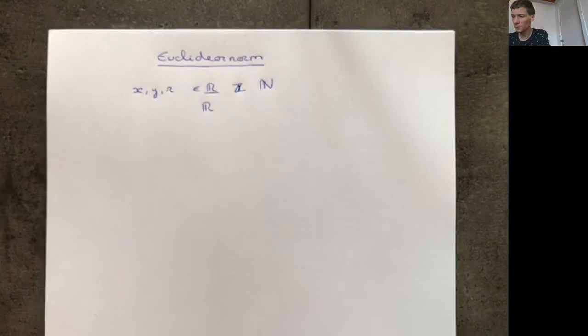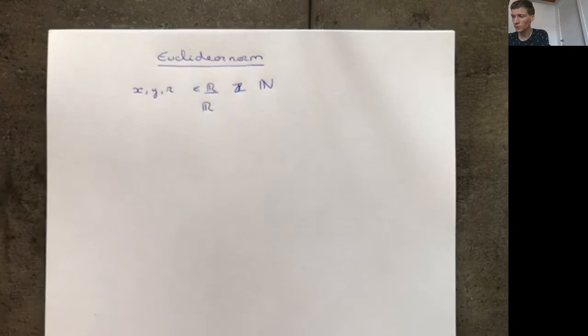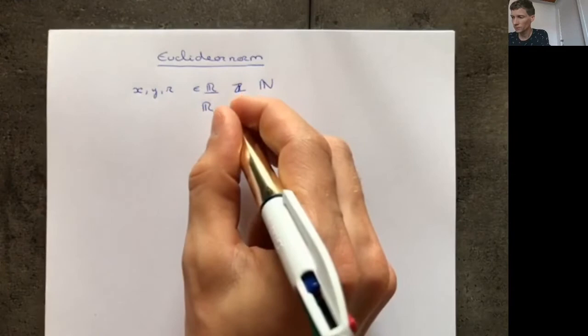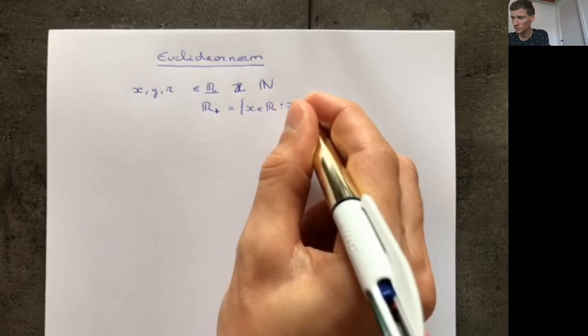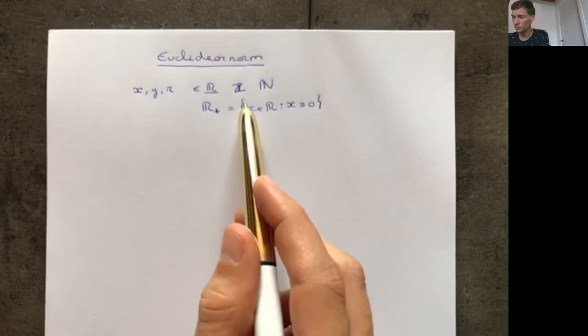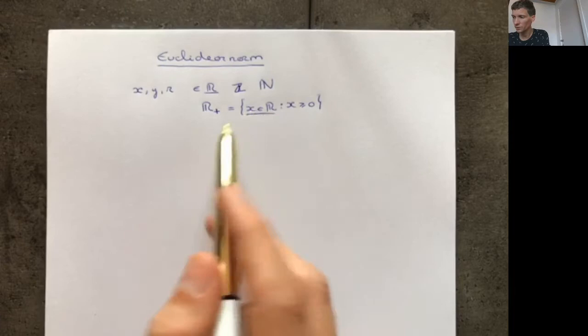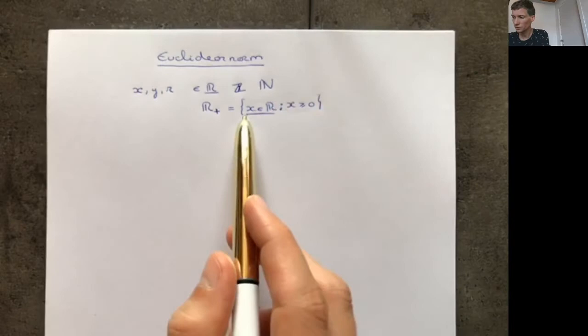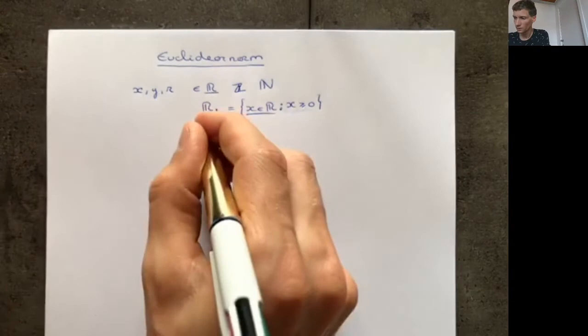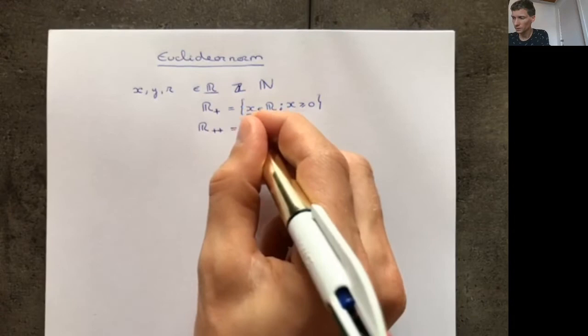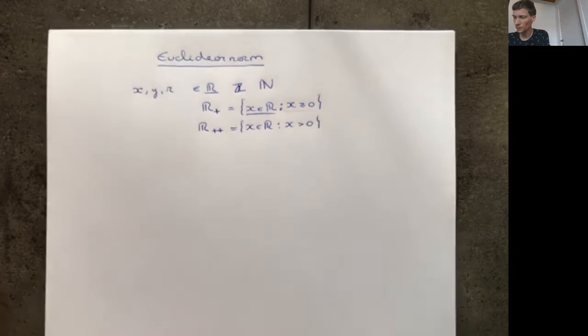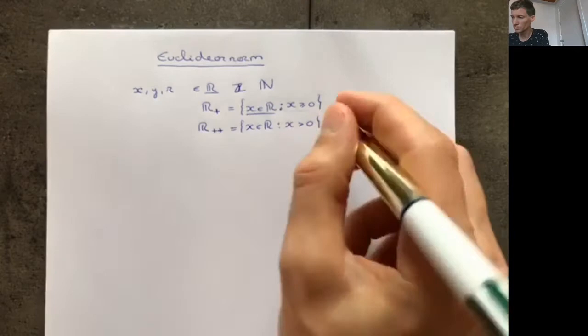If I only look at the non-negative real numbers, I will denote this by ℝ⁺ — these are all numbers x in ℝ such that x is greater or equal to 0. This is set notation: at the beginning of the set you have everything that can potentially be in the set, which must also satisfy what's after the colon. If I use two pluses with the ℝ, that means these are all numbers that are strictly positive. Similarly, ℝ⁻ is all real numbers less or equal to 0, and ℝ⁻⁻ is strictly negative.